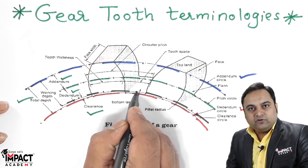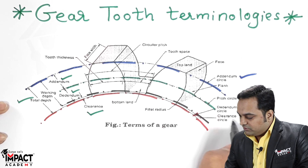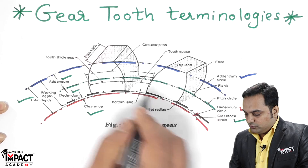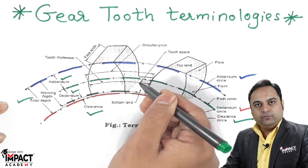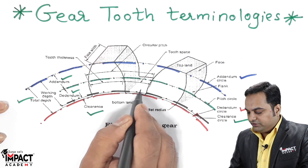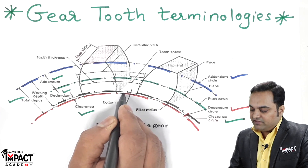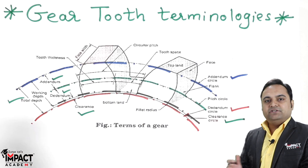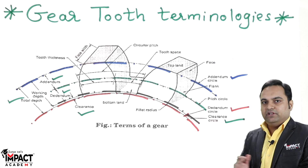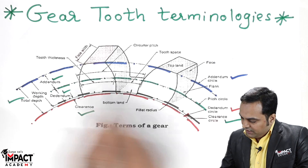When we provide a small amount of clearance, we get a circle called the clearance circle. The gear tooth coming from the other end will be in contact with this clearance circle, leaving some clearance so that the gear operates smoothly without noise and without loss of power.